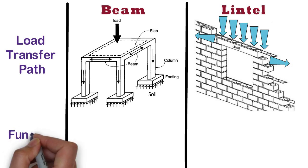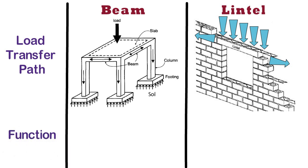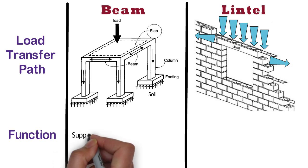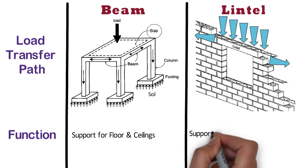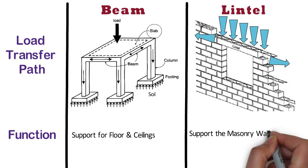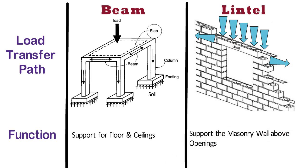The beam provides support to the slab resting on it. It also provides support for the floor and ceilings. Whereas, the main function of the lintel is to support the masonry wall above the openings like door and window, and transfer its load to the side walls.